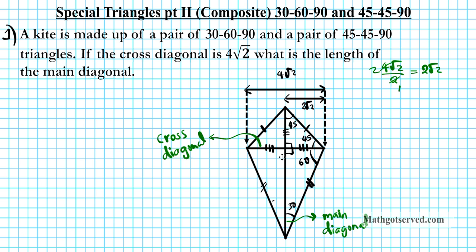Now how are we going to find the length of the main diagonal? We have to find the upper portion and the lower portion. It will be beneficial to split this problem into two triangles — we'll work with the 45-45-90 to find the upper length, then work with the 30-60-90 to find the lower length, and combine the two segments to get the main diagonal.